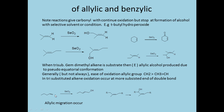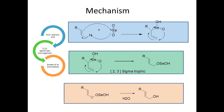Sometimes allylic migration can occur: you may expect the OH group at one position, but the double bond migrates and the OH ends up at a different position. This reflects the selectivity of allylic and benzylic oxidation. The mechanism begins with formation of a seleninic acid — selenium attaches to the hydrogen and double bond, migrating to produce a selenic ester or acid. Next, a 1,2,3-sigmatropic rearrangement occurs, regenerating the same double bond position. The selenium intermediate then breaks to produce the alcohol, which can be further oxidized to an aldehyde or ketone; the reaction can be controlled by choice of conditions.